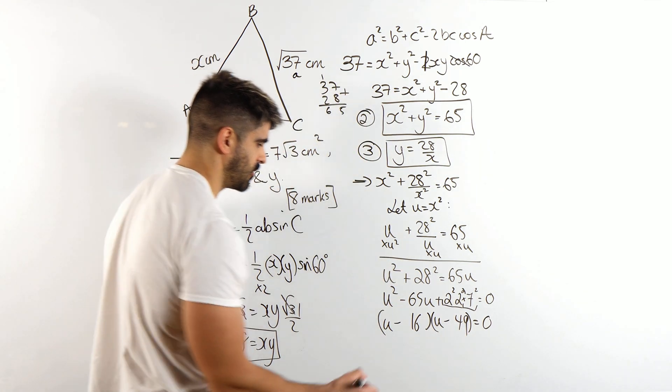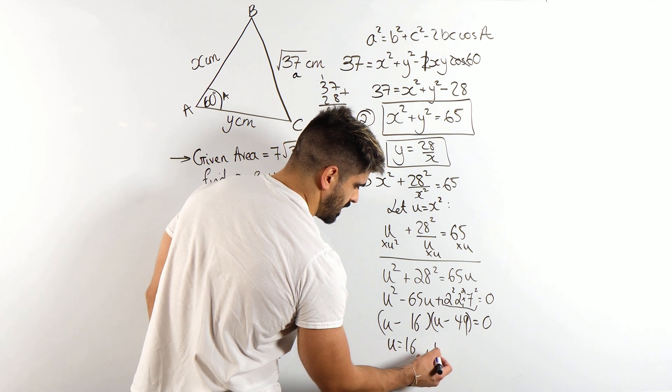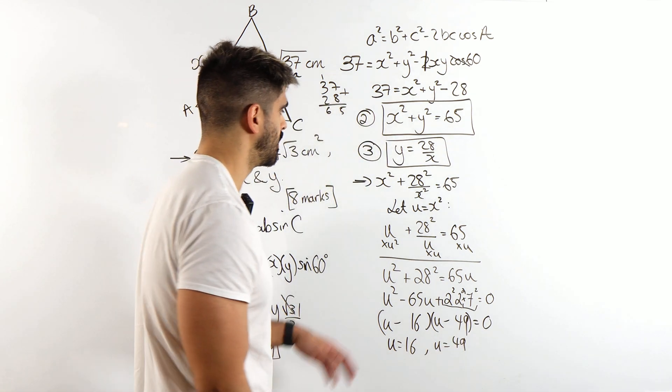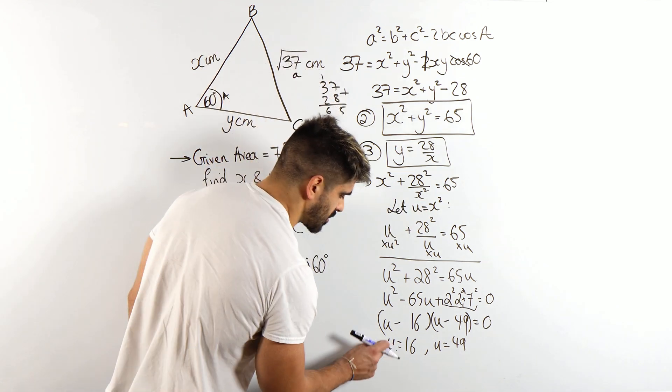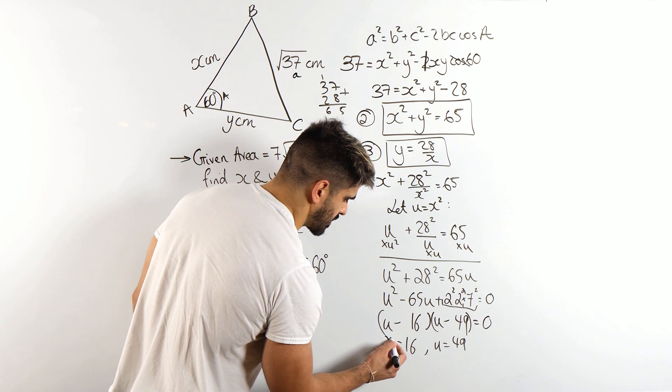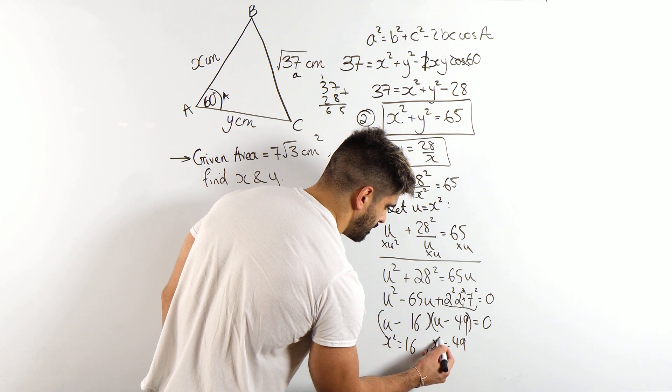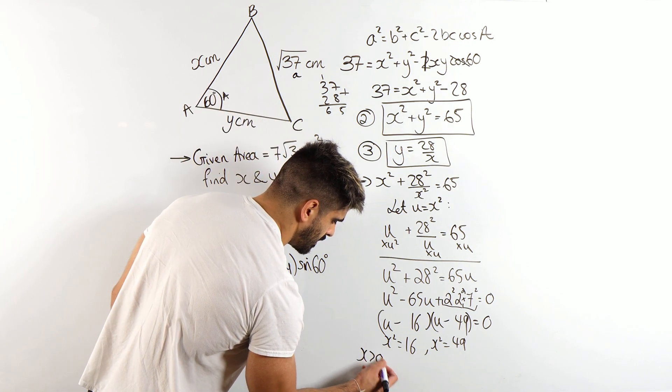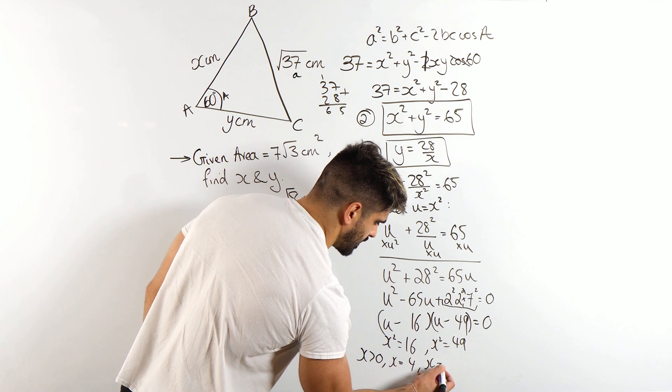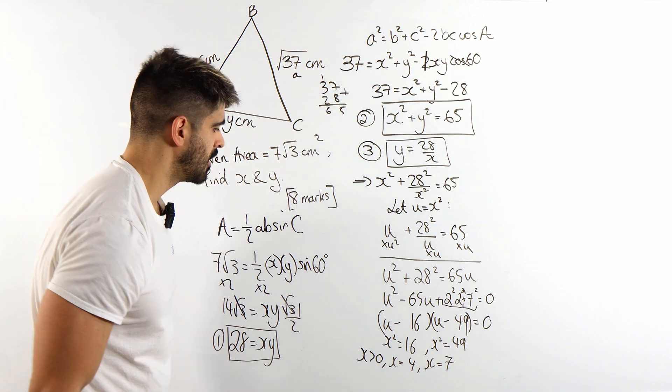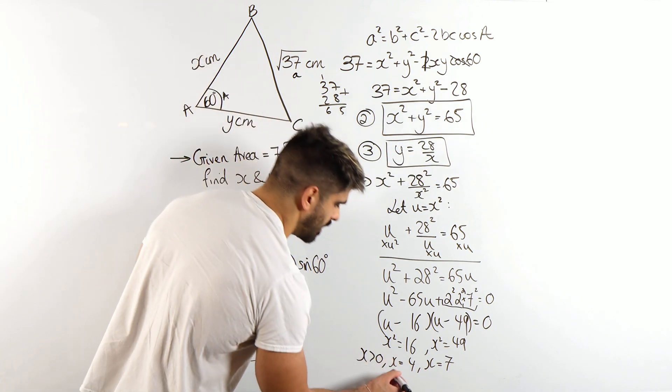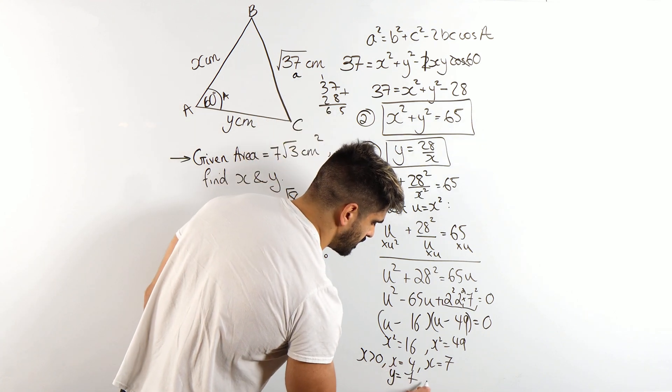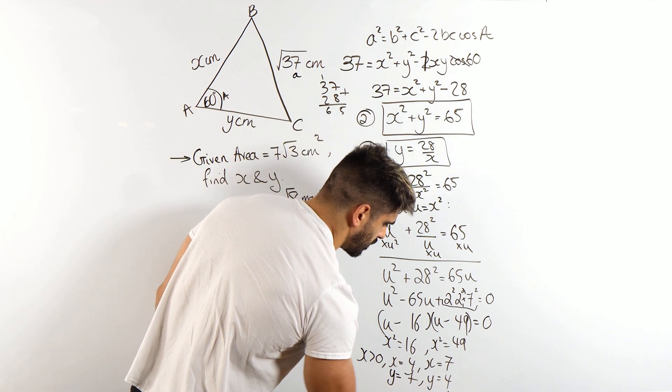So u is 16 and u is 49. Now, we're not done yet, right? Because remember, u, we let it be x squared. So just so I don't have to write a whole new line, I'm going to let that be x squared and let that be x squared. Now, we know that x is positive. So x is positive. So x is going to be 4. x is going to be 7. Which is great because now y, this works out perfectly. y is 28 divided by 4, which is 7. And this would give you y is 4.